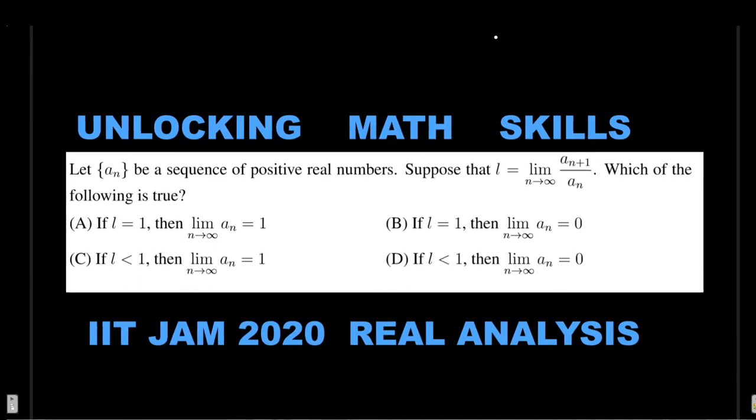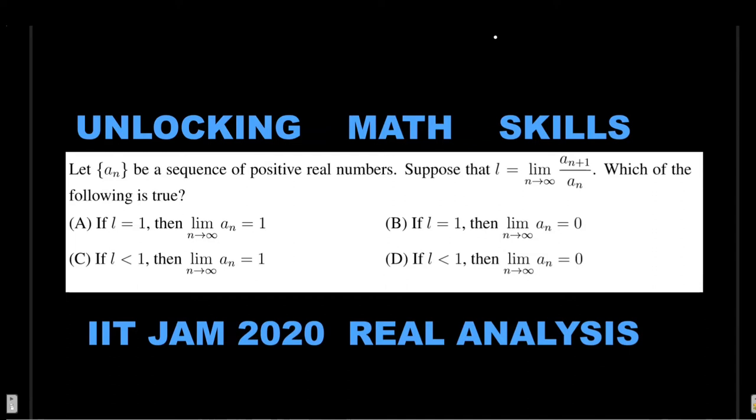Let a_n be a sequence of positive real numbers. Suppose that l is given as limit n tends to infinity of a_(n+1) by a_n. Then which of the following is true? If you look at this question, you can solve it within 10 seconds very easily and perfectly.